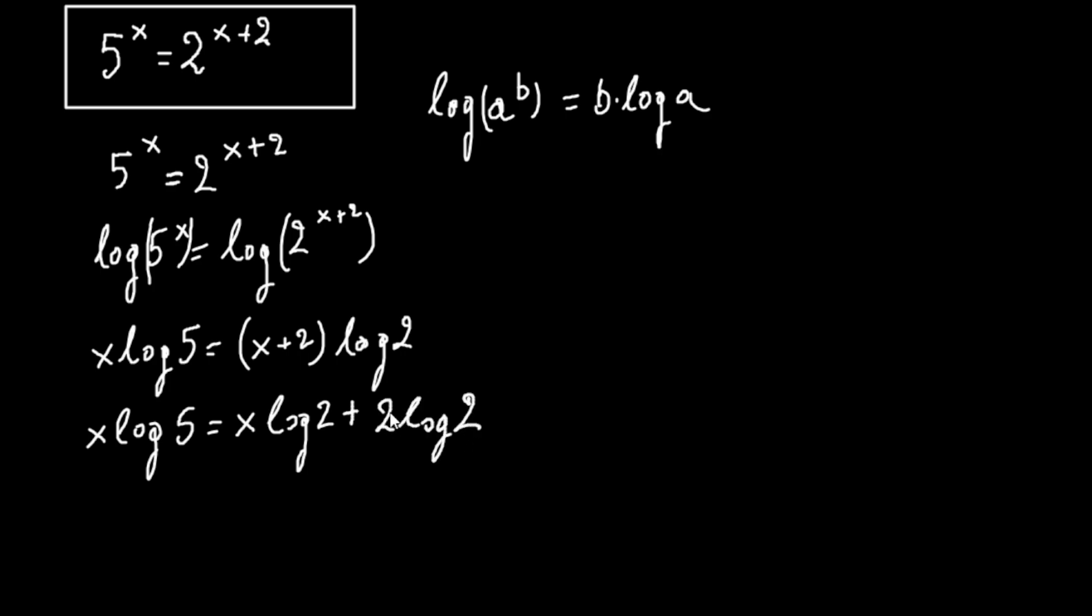Now we take x on this side, so we have x times log 5 minus x log 2 equals 2 times log 2. Here we have common x, so we have x times log 5 minus log 2 equals 2 times log 2.